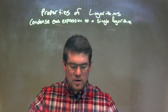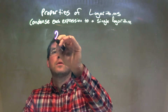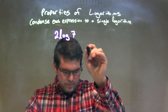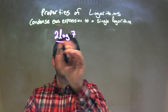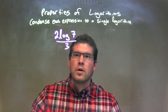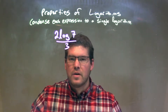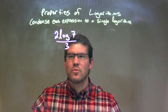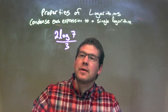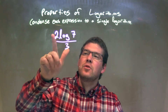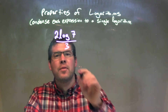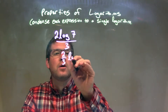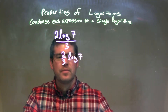If I was given this logarithm — 2 log 7 divided by 3 — how do we condense this? I'm going to look at the 2 and the 3 right there. I can rewrite that to be 2 thirds out front, log of 7.